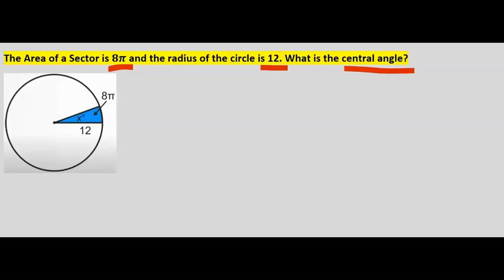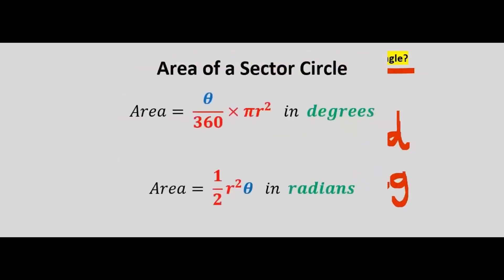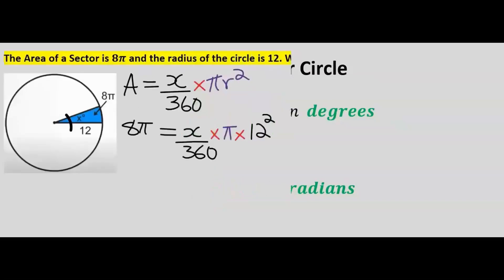We have a sector and here we are not sure if x is in radians or degrees. Both formulas will lead us to the answer. Let's try the degrees formula. The area is 8π while the radius is 12.